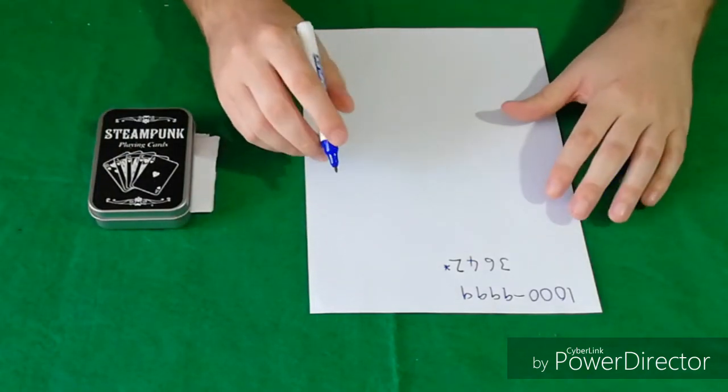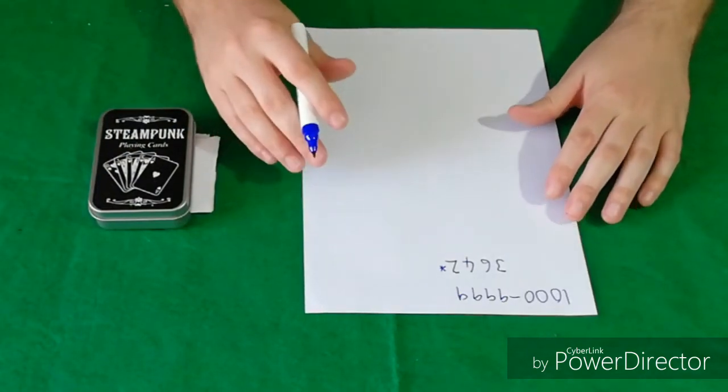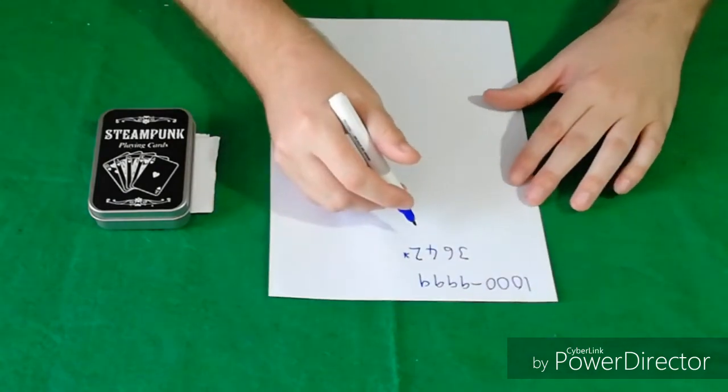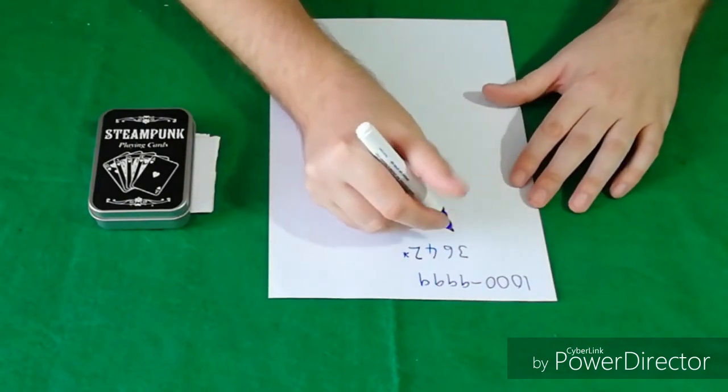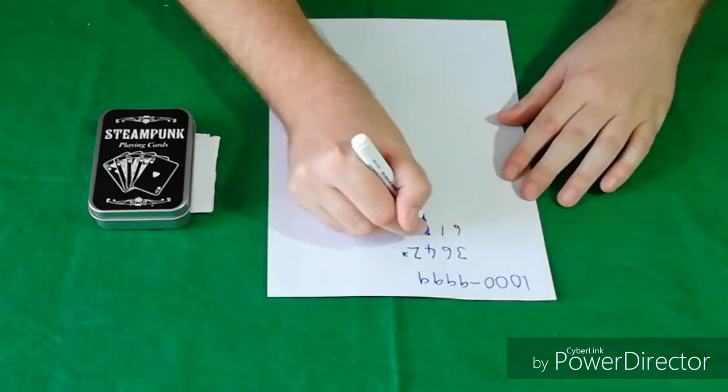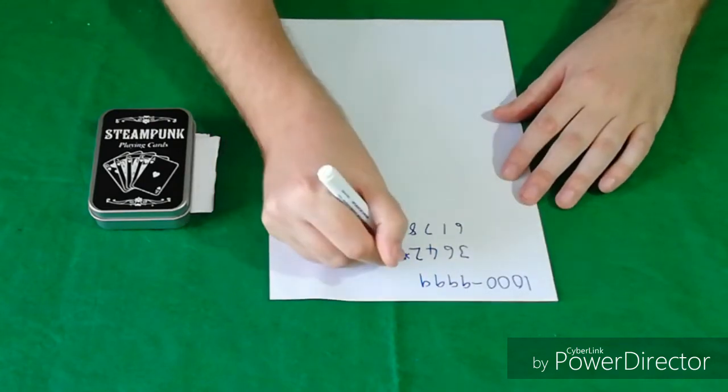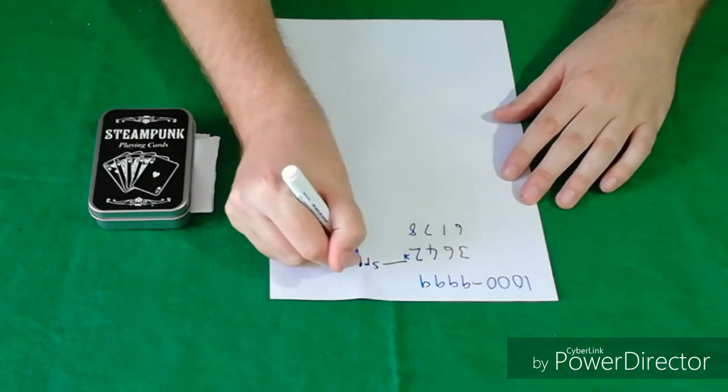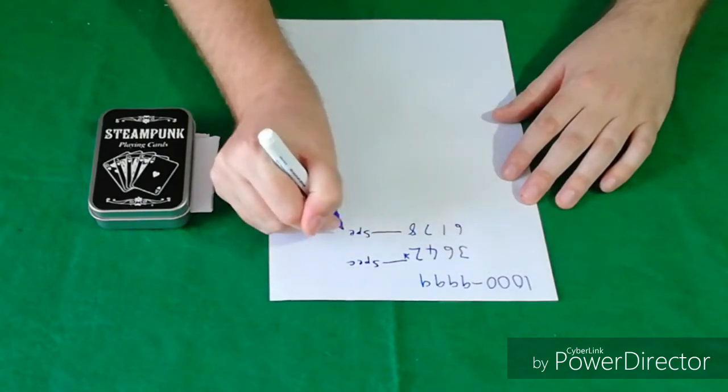Then you instruct your spectator, your spectator sorry about that, you instruct your spectator to write another number between 1000 and 9999. So let's say they go for 6178. So this one is spectator. This one is spectator.